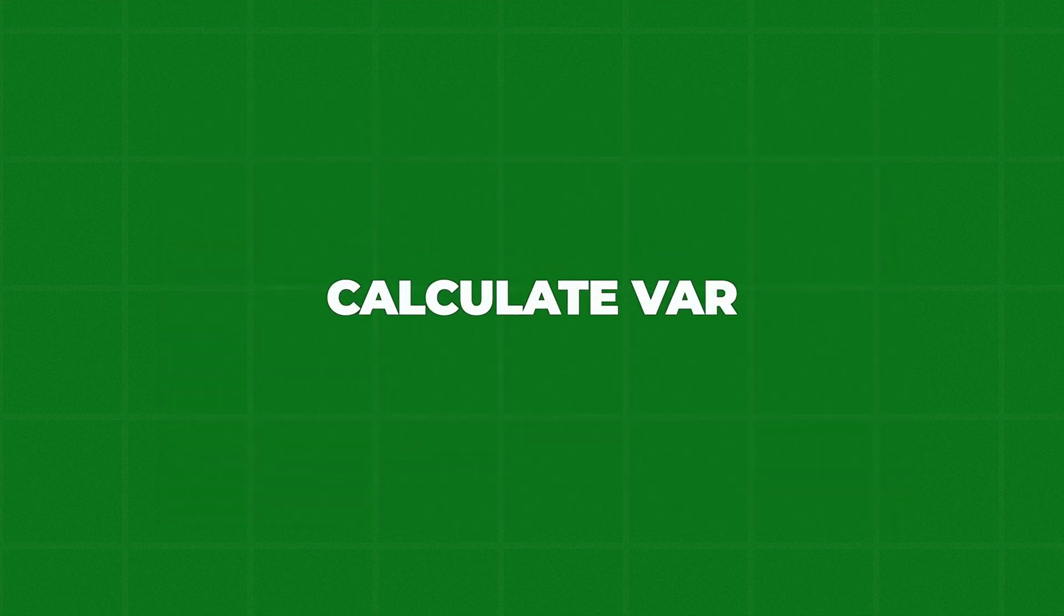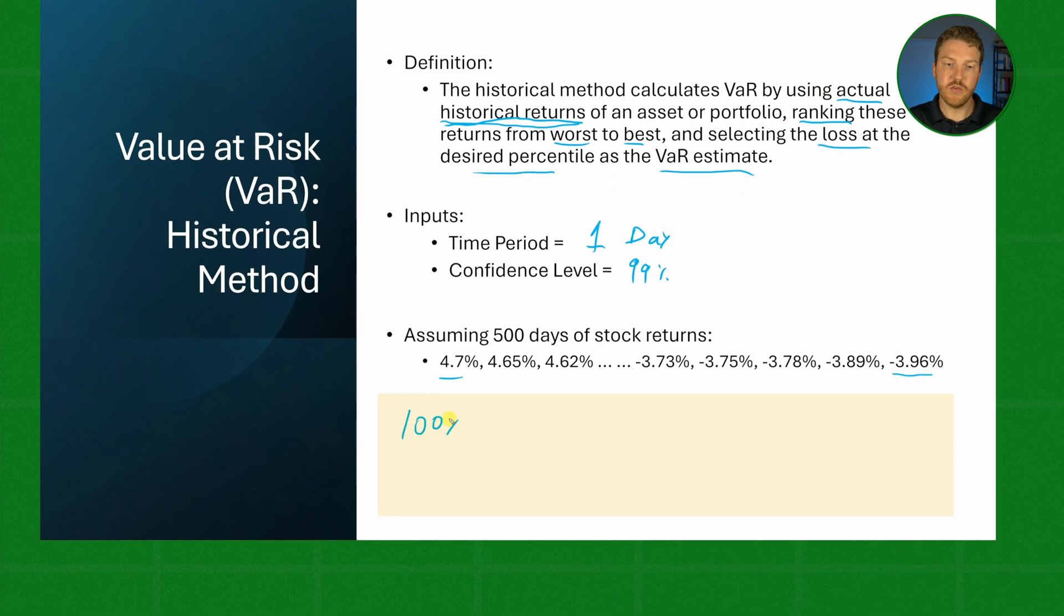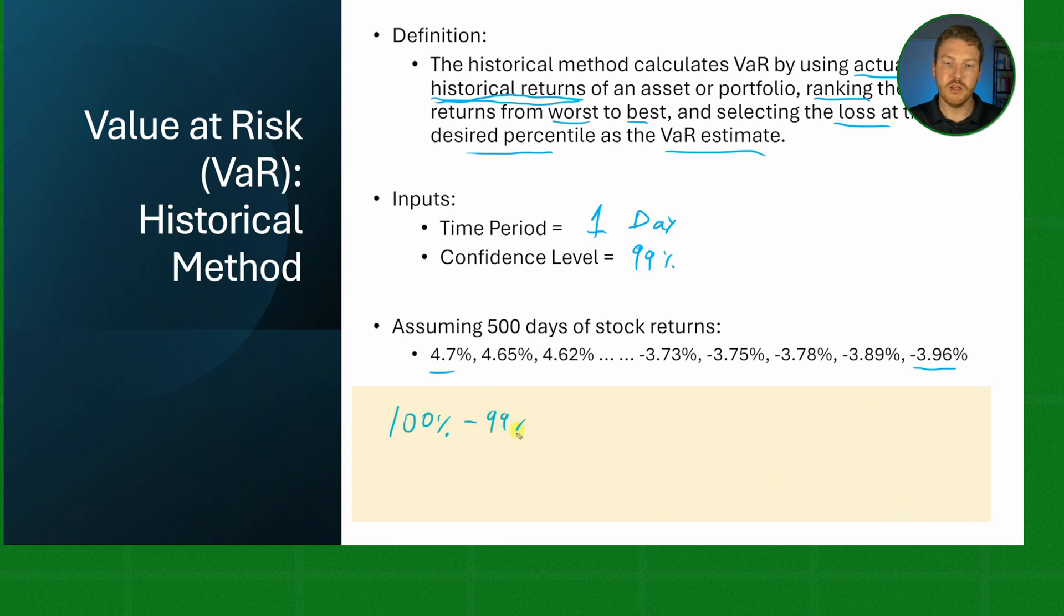Now how would we calculate our VaR? Well, we're looking for the 99th percentile confidence interval. So we can take 100% minus 99% which gives us 1%. We're really looking for the one percentile outcome. If we have 500 observations, the one percentile outcome would be the fifth worst observation. So we count: 1, 2, 3, 4, and 5.